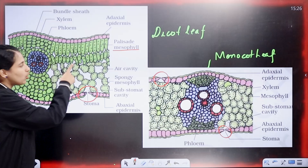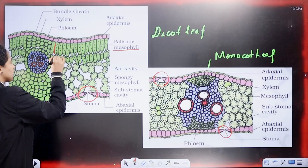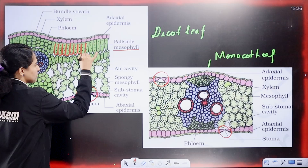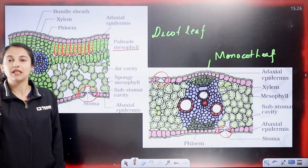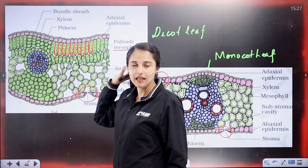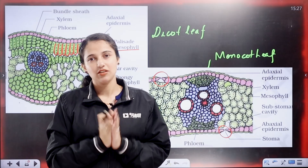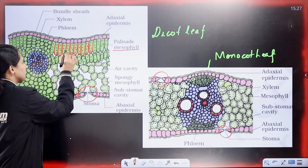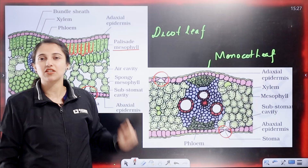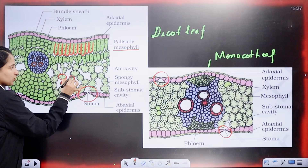When we look at the dicot leaf, there is inequality in the mesophyll tissue. If you look vertically, the mesophyll tissue is arranged parallel — this is called palisade mesophyll tissue. There is no intercellular space, and the vertical cells are parallel. This contains chloroplasts. The oval-shaped mesophyll tissue is in a relaxed and loose arrangement.